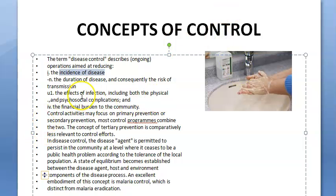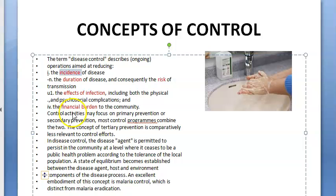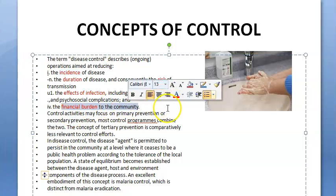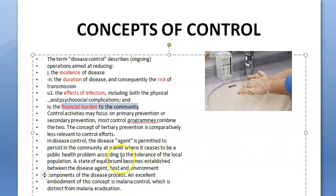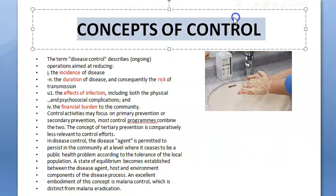You also want to reduce the effects of the infection — you want to control the physical complications, the psychosocial complications. Even the financial burden on the community will get reduced if you reduce the disease. Your focus for control will be on primary prevention so that people don't get it, and secondary prevention — if they get it, you want to reduce the duration of the disease.